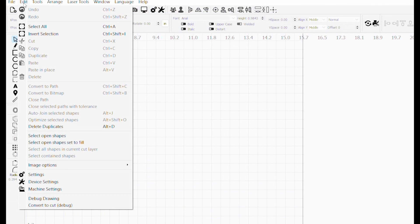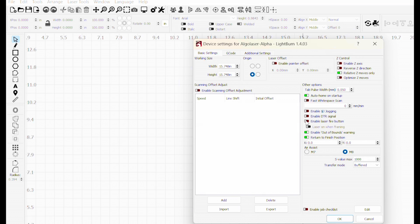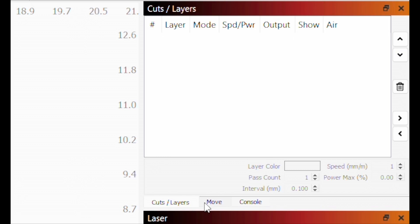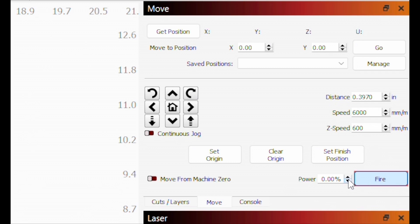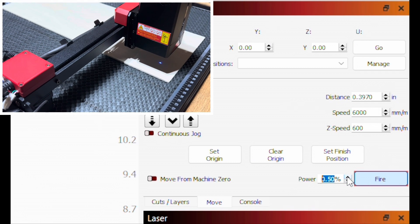Before starting I recommend changing a couple of device settings by turning on the laser fire button and selecting to turn on the laser when framing. Next click on the move tab, select fire and the power can be turned up to view the laser. I run mine at one percent.